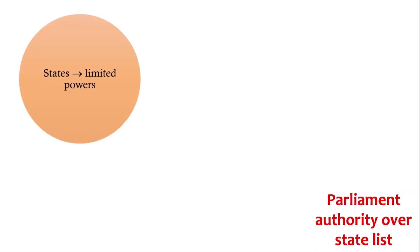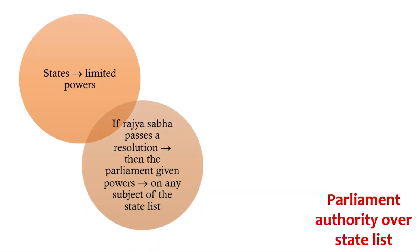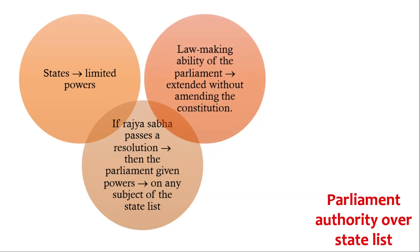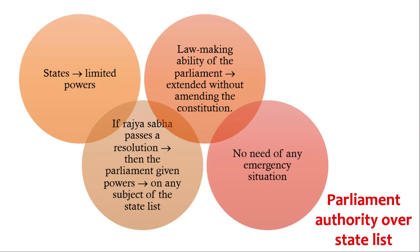Parliament Authority over State List: The states are given limited powers, and even within those limited powers, the states do not have exclusive control. If the Rajya Sabha passes a resolution in regard to the national interest, then Parliament is given powers to make laws on any subject of the state list. This means the lawmaking ability of Parliament can be extended without amending the constitution. Importantly, this can happen whenever the Rajya Sabha passes such a resolution — there is no need for any emergency situation in the state or the country.